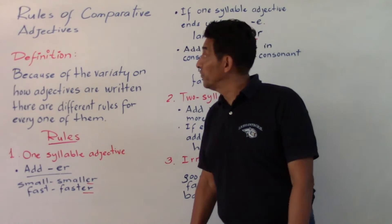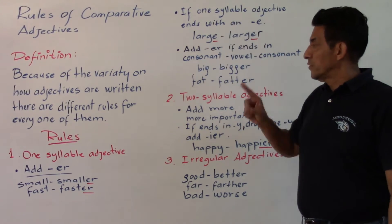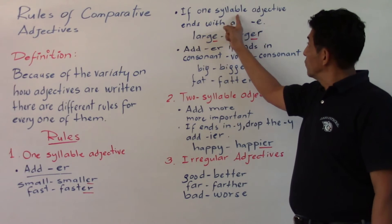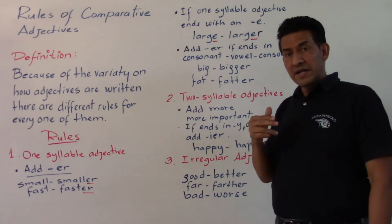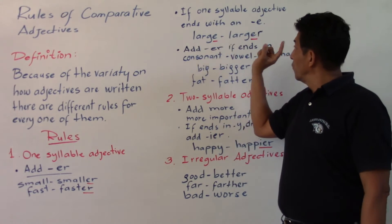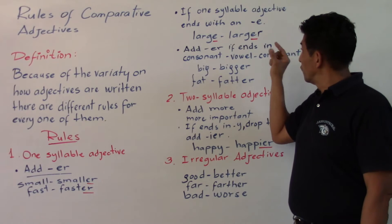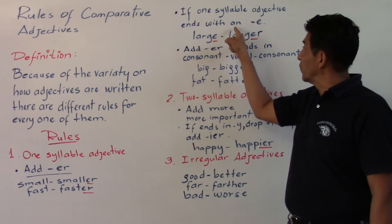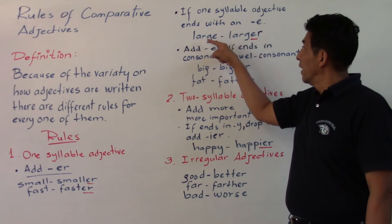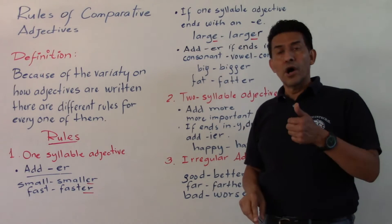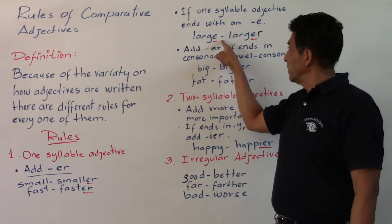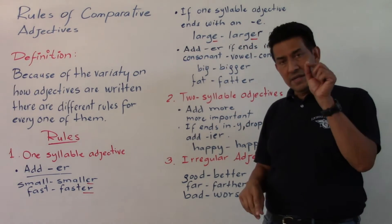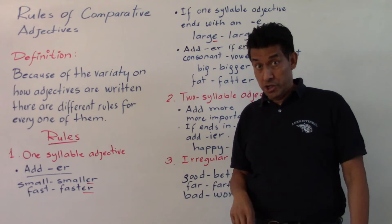There is also a sub-rule within one syllable adjectives: if a one syllable adjective ends with the letter E — like 'large' — we add just the letter R. So 'large' becomes 'larger'.